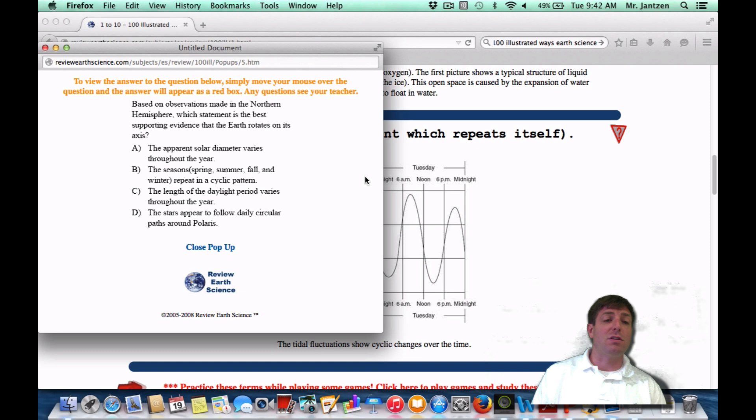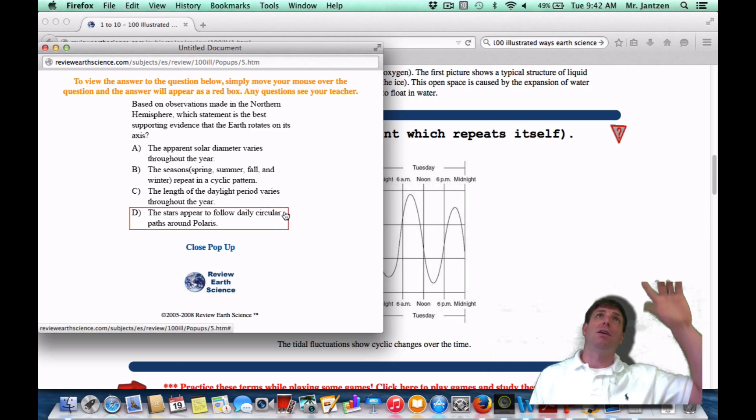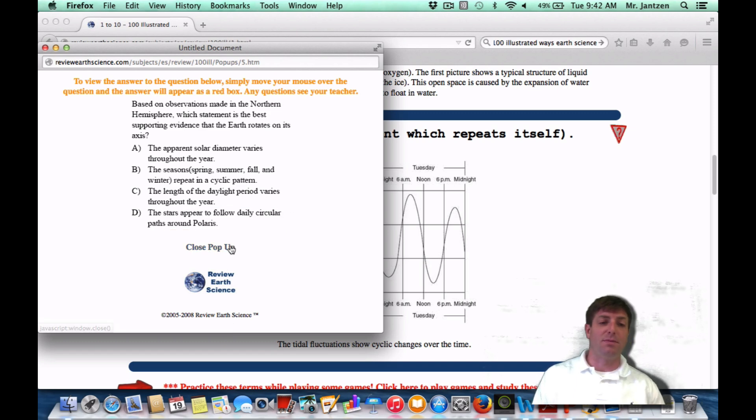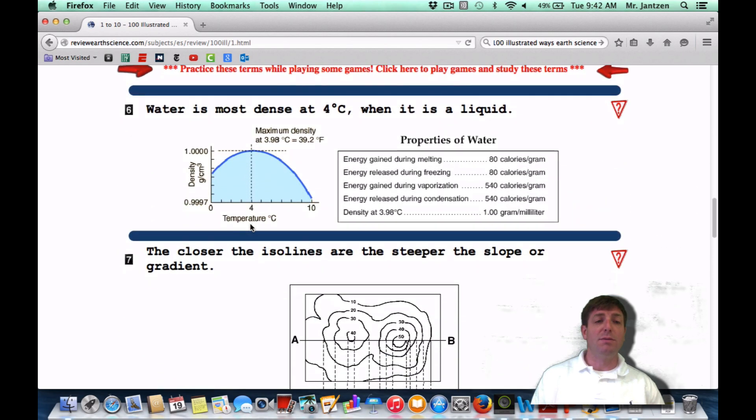If you were to see this as a Regents question: based on observations made in the Northern Hemisphere, which statement is best supporting evidence that the Earth rotates on its axis? As soon as you say it rotates, you should think spinning. And what result of the spinning is going to be those circumpolar stars that actually appear to go around Polaris. Polaris is the North Star. Everything's going to appear to go around that, so they're called circumpolar stars. That's a great example of a cyclic change.